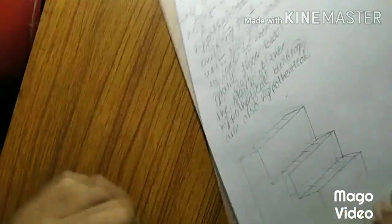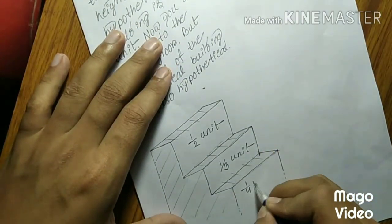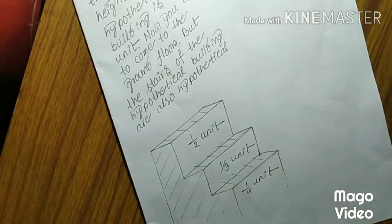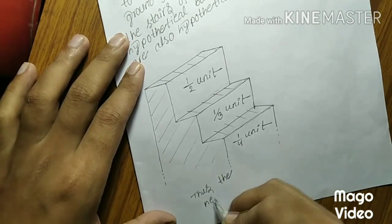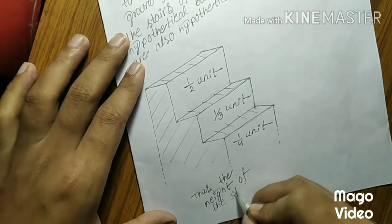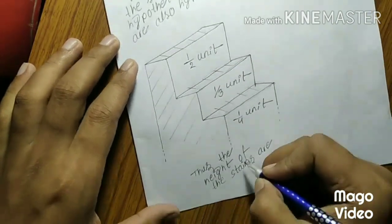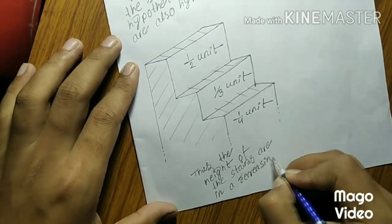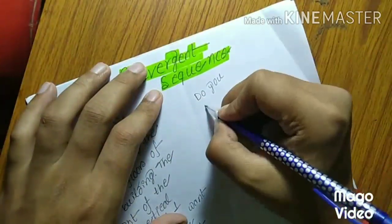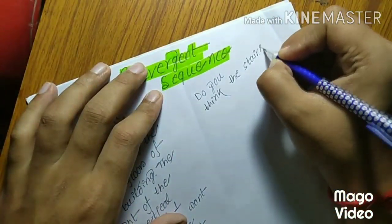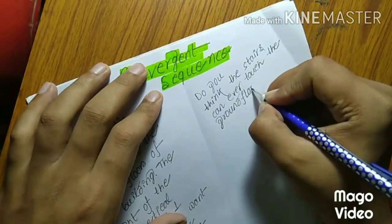Half unit, one-third unit, one-fourth unit. Thus, the height of the stairs are in a decreasing order. Do you think the stairs can ever touch the ground floor?